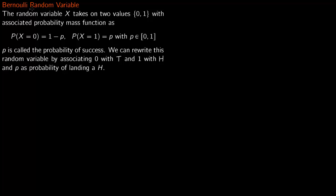We start by talking about Bernoulli random variable. The random variable x takes on two values, 0 and 1, with associated probability mass function: probability x equals 0 is 1 minus p, and probability x equals 1 is p. You can check it is a probability mass function because when you add 1 minus p with p you get 1. So p lies in the interval 0 to 1, and p is called the probability of success.